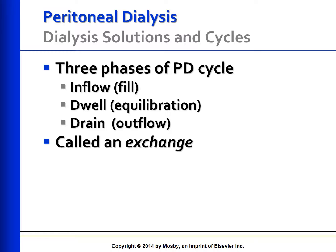Peritoneal dialysis is accomplished by infusing the dialysis solution into the peritoneal space. The three phases of a PD cycle, also called an exchange, include the inflow or fill stage, the dwell or equilibration phase, and the drain or outflow stage. During inflow, a prescribed amount of solution is infused through the peritoneal catheter over about 10 minutes. The flow rate may be decreased if the patient has pain. The dwell phase is when diffusion and osmosis occur between the patient's blood and the peritoneal cavity.